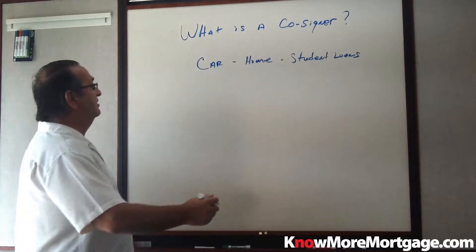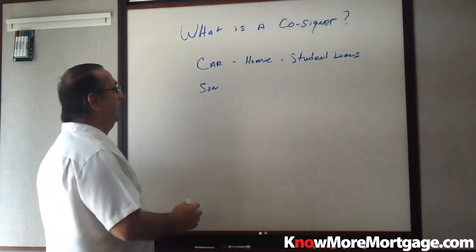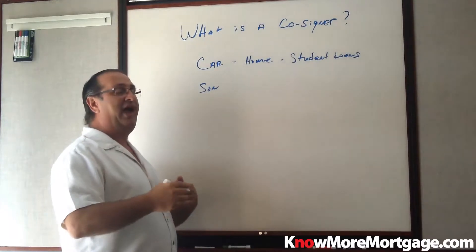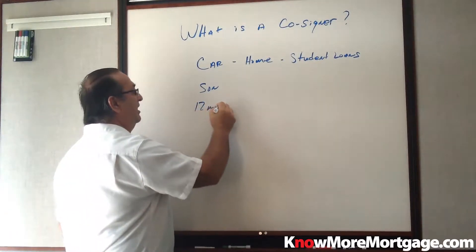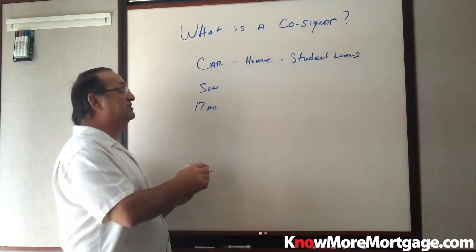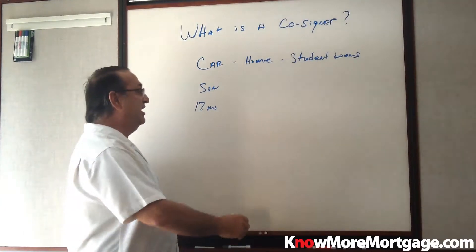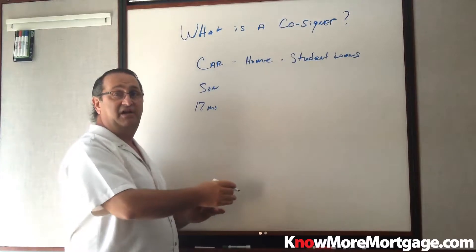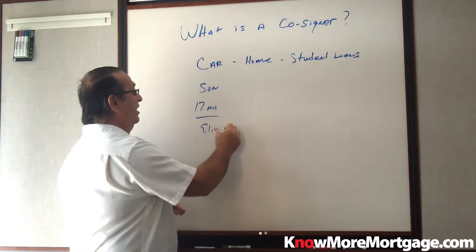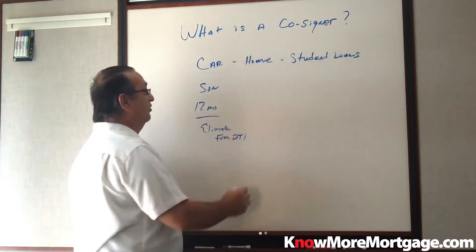If you co-signed a loan for your son to buy a car, and your son has made those payments for the last 12 months out of his bank statement, and we can get 12 months of your son's bank statements showing that he's making that payment, we can eliminate that car payment from your debt-to-income ratio. But we need 12 months to eliminate it from your DTI, because that debt is 100% yours.